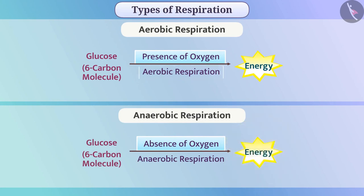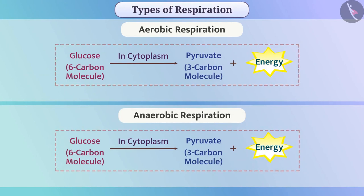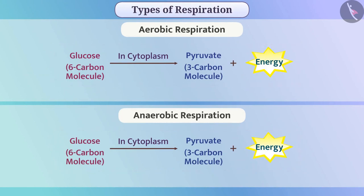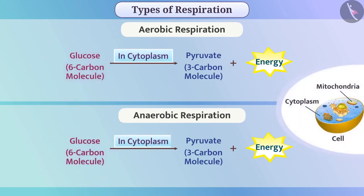Aerobic respiration produces more energy than anaerobic respiration. The first step of both these processes is the same. In this process, the 6-carbon molecule glucose present in the cytoplasm of the cell is broken down into the 3-carbon molecule pyruvate, and energy is generated.